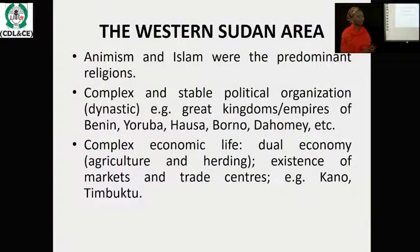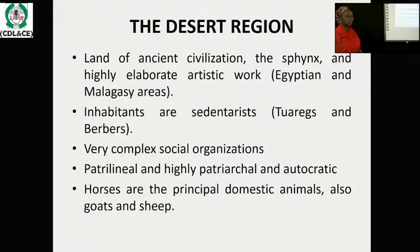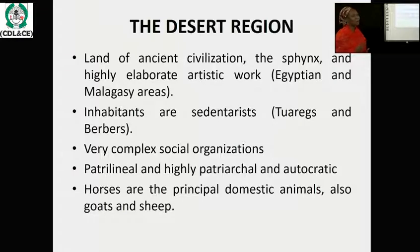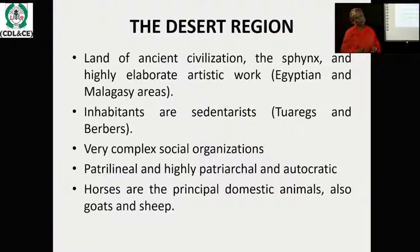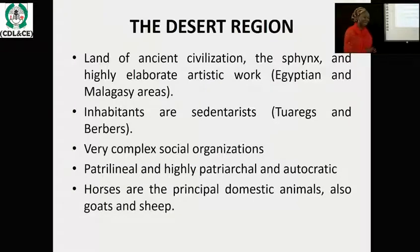The Western Sudan area also has a complex economic life with a dual economy — they are agriculturalists and herders who also deal with commerce. The Desert Region is called the land of ancient civilization, bringing to mind the Egyptians and the Malagasy. The inhabitants are sedentary; examples include the Tuareg and the Berbers. They are mostly Islamic, patrilineal, and highly patriarchal and autocratic.